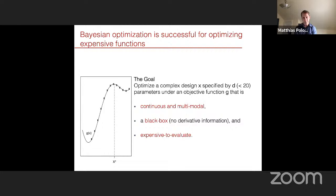So what is BayesOpt? BayesOpt is a method to optimize expensive functions. Our setting is we want to optimize a complex design X specified by D parameters — D is usually not more than 20, but recently we've been extending it to around 100 — with the goal to optimize an objective function G. This function is continuous and can be multimodal, meaning there can be multiple local optima and our goal is to find the global optimum. It's a black box function: when you evaluate G of X, you get the function value, possibly with noise, but there's no gradient. And each evaluation can take half a minute, a few hours, or in material science even days to weeks.